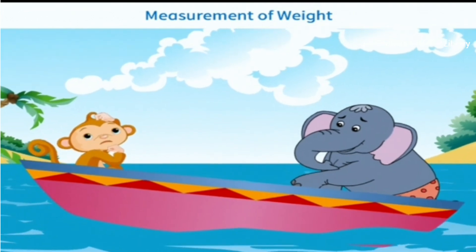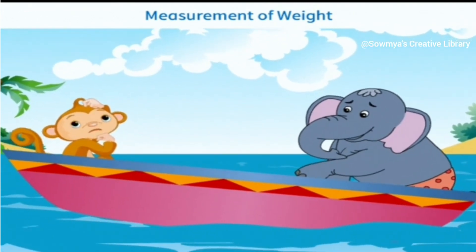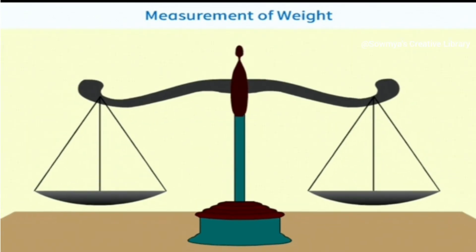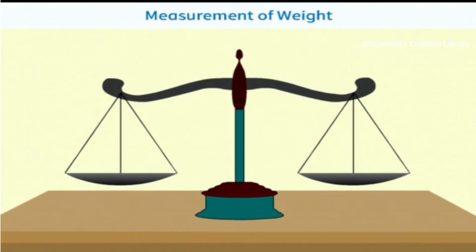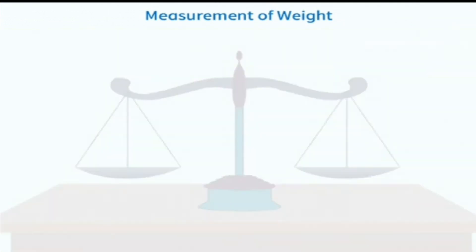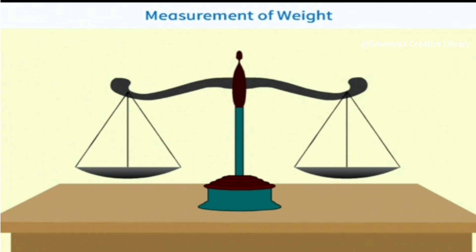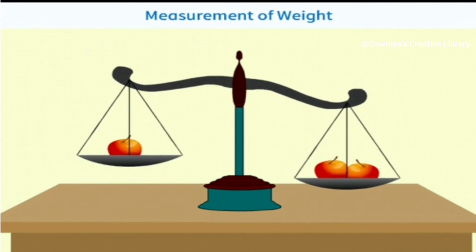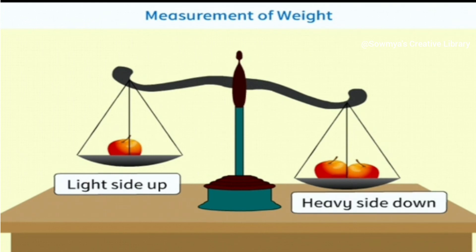Weight is the measure of how heavy an object is. People use the weighing scale to measure weight. This is how it works. The weighing scale has two plates or bowls. We place one object in one bowl. The lighter object goes up. The heavier object comes down.